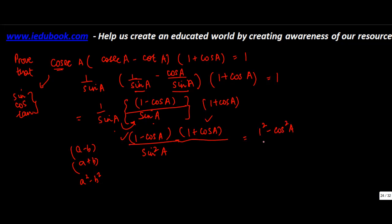So you can write this as A square minus B square. This can be written as 1 square minus cos square A, or 1 minus cos square A upon sin square A. But we know that cos square A plus sin square A is equal to 1, or sin square A is equal to 1 minus cos square A.